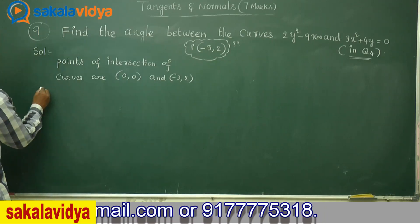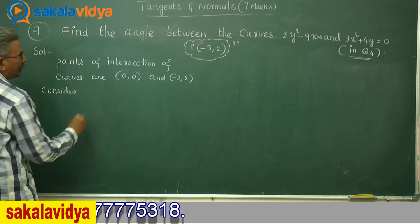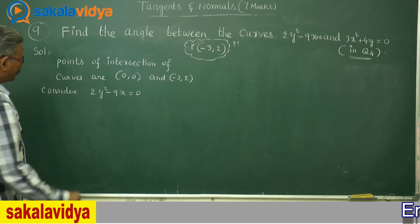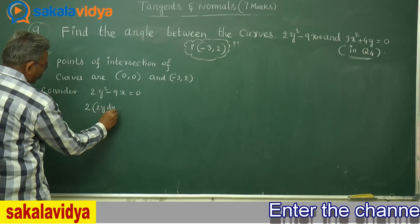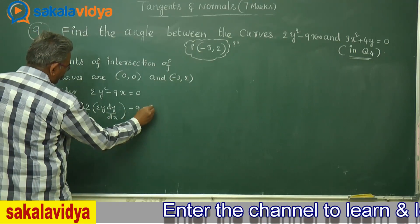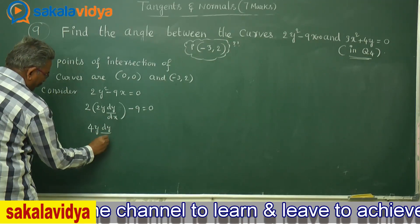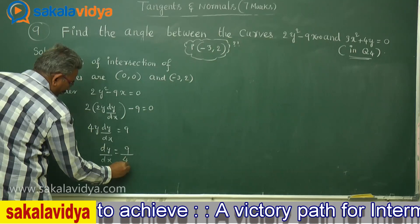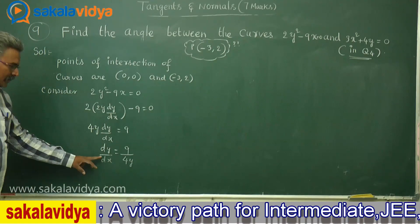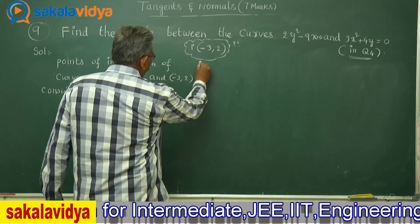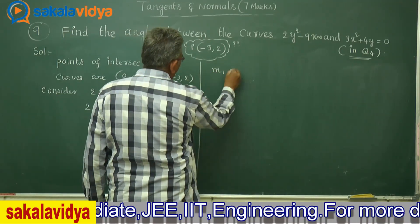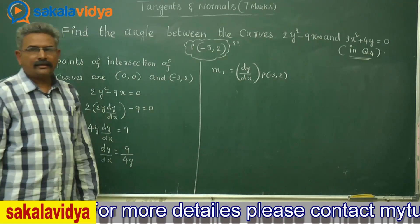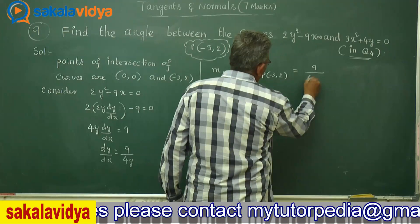Consider the first curve: 2y² − 9x = 0. Differentiating both sides with respect to x: 2·2y·dy/dx − 9 = 0, giving 4y·dy/dx = 9, so dy/dx = 9/(4y). The slope of the tangent to the first curve, m1 = dy/dx at P(−3, 2) = 9/(4×2) = 9/8.